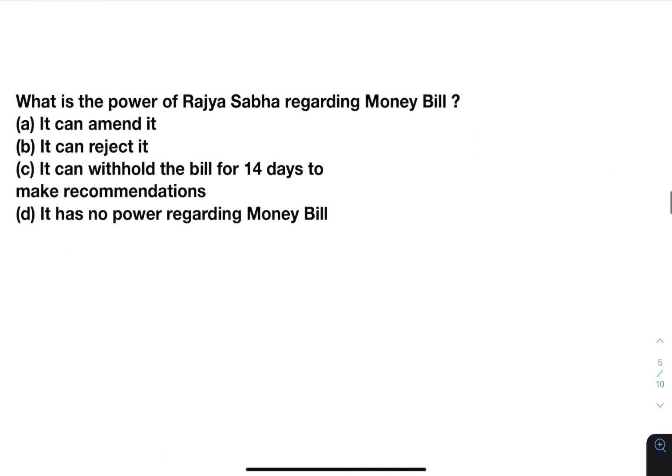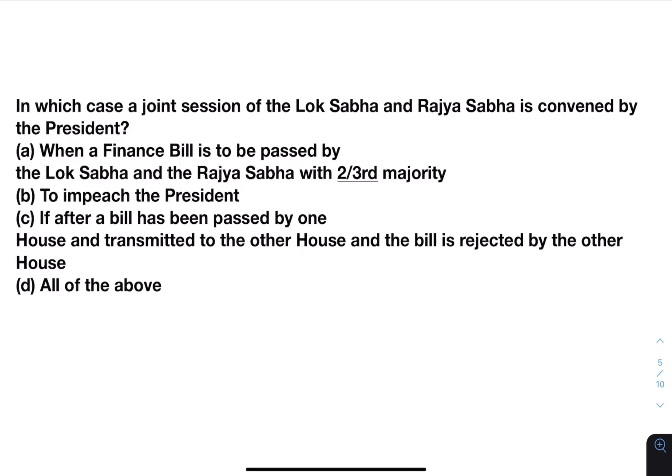Next: what is the power of Rajya Sabha regarding a money bill? Options — it can amend it; it can reject it; it can withhold the bill for 14 days to make recommendations; it has no power regarding money bill. Answer will be C — it can withhold the bill for 14 days to make recommendations. Next: in which case is a joint session of the Lok Sabha and Rajya Sabha convened by the President? When a finance bill is to be passed with two-thirds majority — no, because joint session is called only for ordinary bills. To impeach the President — also not correct. The correct case is when a bill passed by one house is rejected by the other house.